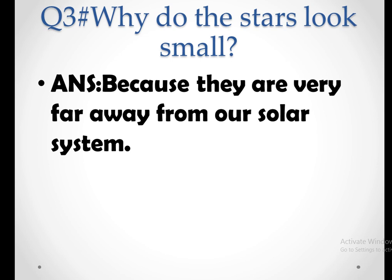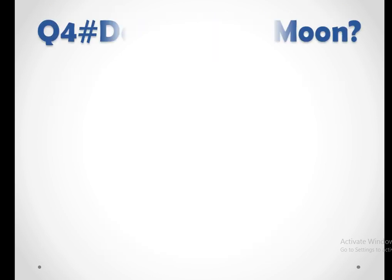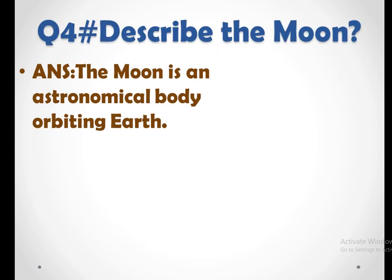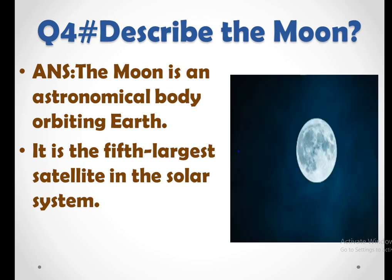Question four is describe the moon and the answer is the moon is an astronomical body orbiting earth. It is the fifth largest satellite in the solar system. Here you can see the picture of the moon.